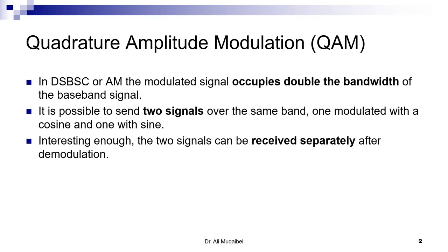What is Quadrature Amplitude Modulation? Remember that in double-sideband suppressed carrier, or even in AM, when we modulate the signal, it occupies double the bandwidth. This is why we call them double-sideband suppressed carrier and double-sideband plus carrier — the bandwidth is double that of the baseband signal. Doubling the bandwidth means we are going to consume more bandwidth.